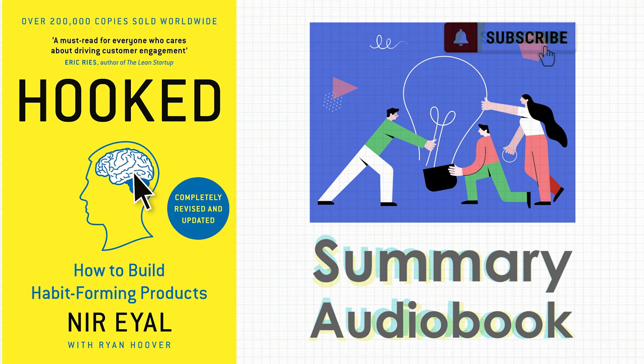The secrets to building habits have been guarded for years. Nir Eyal studied related topics in psychology and behavioral economics, published observations on his blog, and with reader input found a pattern: the Hook Model. It consists of four steps — one: trigger, a cue like a notification or email; two: action, a behavior like clicking a link; three: variable reward, a pleasant result that feels new every time.